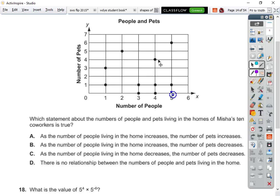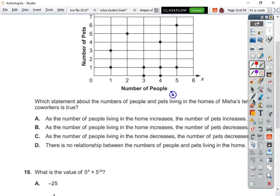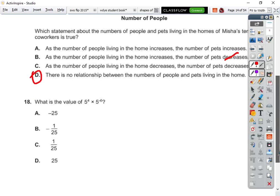I mean, it stays fairly constant at one. You have these two people who love their animals. As the number of people living in the home increases, the number of pets decreases. That's clearly not true. As the number of people living in the home decreases, the number of pets decrease. And there's no relationship between them. I'm willing to go with there's no relationship between the two. Because it really does seem that people either have one or none pets, and then you have four people who have a little extra pets.